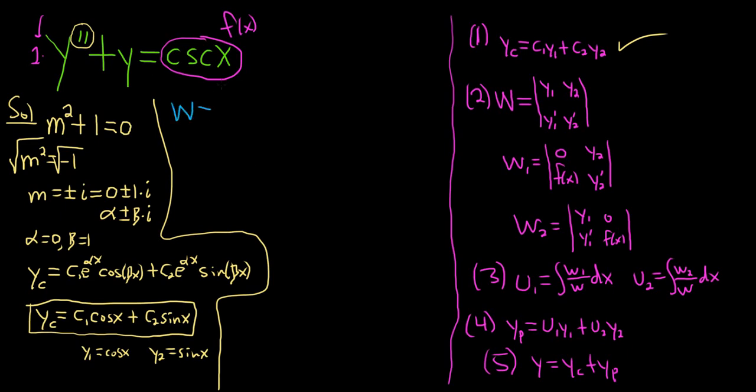So w is the Wronskian of the y's. So we have cosine x, sine x, and in the second row we take the derivative. The derivative of cosine is negative sine, and the derivative of sine is cosine. Alright, good stuff. Then you multiply this times this. That gives you cosine squared. Minus this times this, but there's already a minus, so it's going to become a plus, so sine squared. So you just get one. So w is equal to one. I'm going to put that in a box. It's always good to box in stuff when you find it. It just helps you keep track of what's going on.